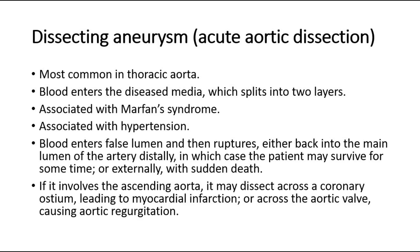Dissecting aneurysm, also known as acute aortic dissection, is most common in the thoracic aorta. Blood enters the diseased media, which splits into two layers. It is associated with Marfan's syndrome and hypertension. Blood enters the false lumen and then ruptures either back into the main lumen of the artery distally, in which case the patient may survive for some time.